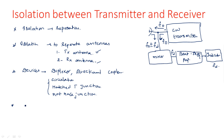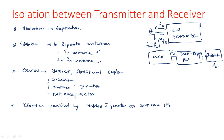The isolation achieved by hybrid junctions such as magic T, rat race, and directional couplers is around 60 decibels theoretically. However, in practical cases, isolation is limited to 30 decibels.